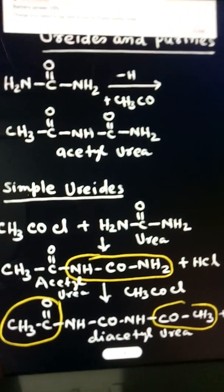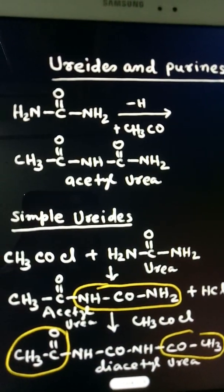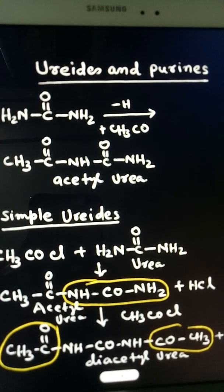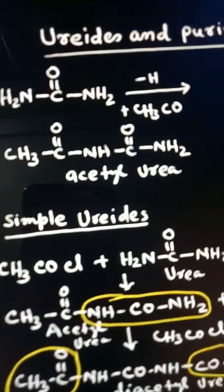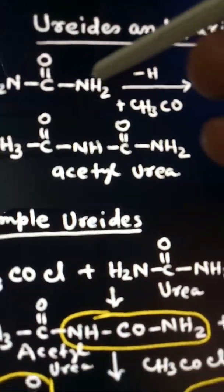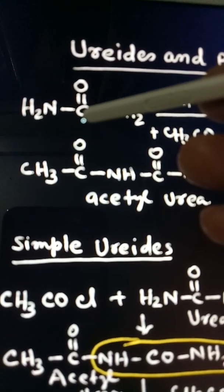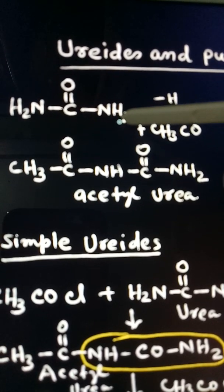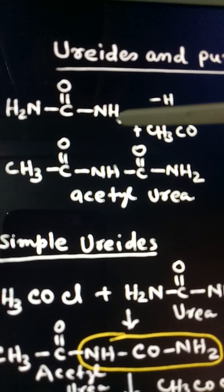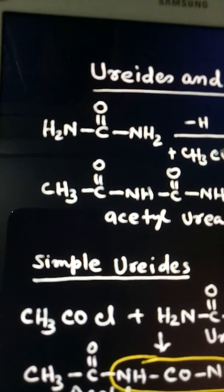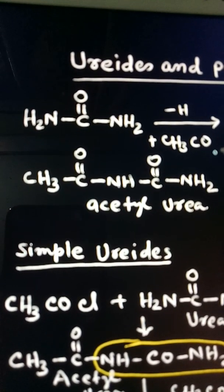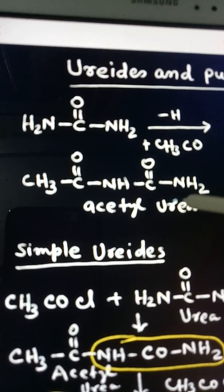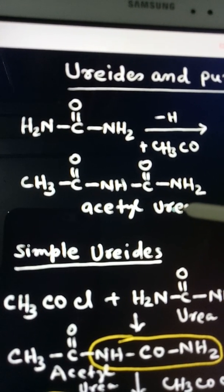So this is urea, you can see here. And if you remove one hydrogen from NH2 and add acyl group CH3CO, then this compound is forming acetyl urea. So this is simple ureides.